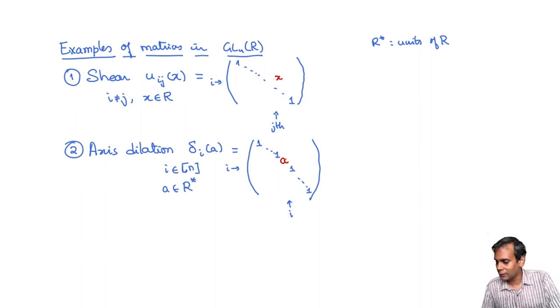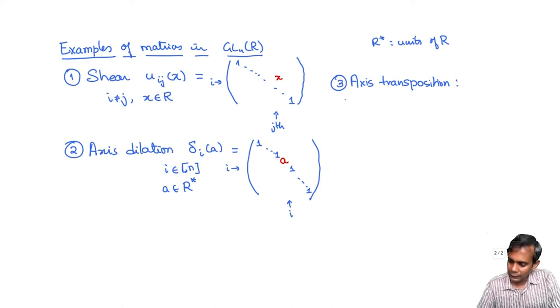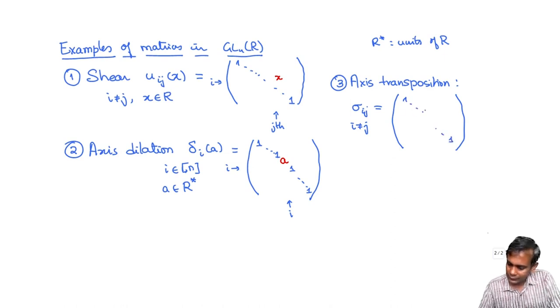And the third element which is kind of my favorite is called the axis transposition. And it is just sigma_ij, i is not equal to j. And it is the matrix given by, well it is basically the identity matrix except that two diagonal entries, two rows and two columns are disturbed. You take the ith row and the jth row, you take the ith column and the jth column. And there you put zeros along the diagonal and you put one in these positions. So in the ijth entry and the jith entry will be one.